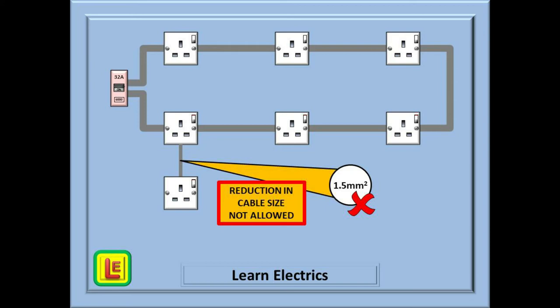Another bad practice is to connect a spur to the ring with a reduced cable size. A reduction in cable size is not allowed for cables that connect to the ring. It is not looking good at the moment. We cannot have spurs on spurs and we cannot reduce the cable size. Well, yes we can, if we do things a little differently.